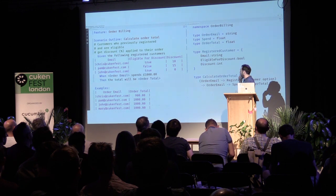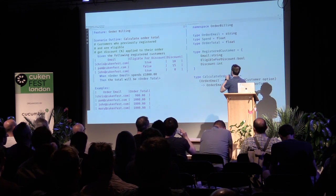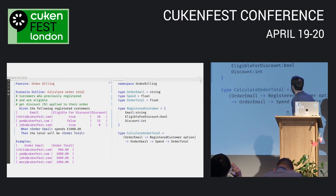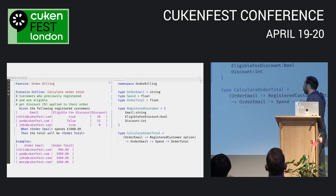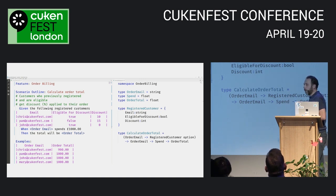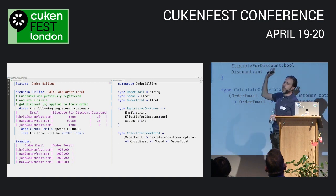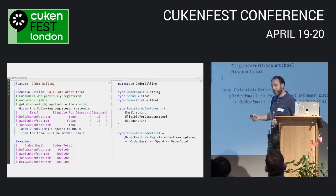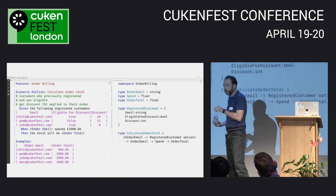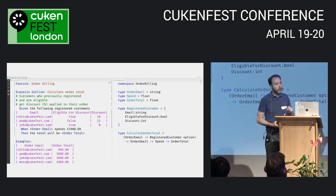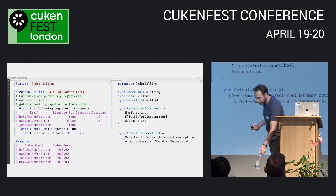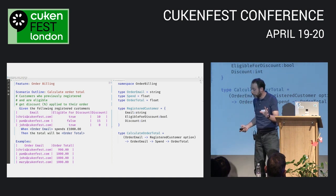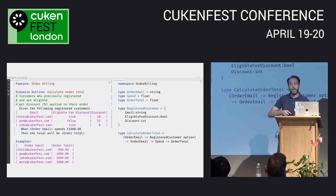So now this says: give me the ability to find a registered customer or not by order email, give me the order email, give me the amount spent, and I will calculate the order total. Most people agree that's roughly what the scenario describes — but then I read something that completely changed my understanding.